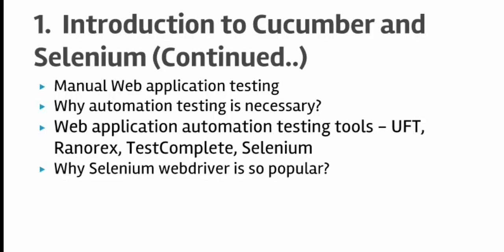Before we start with Cucumber and Selenium, let me explain what manual web application testing is. To test applications, software organizations generally like to do manual testing. But manual testing has disadvantages — you have to enter data manually in web pages and execute the tests. If the test is very lengthy, it takes a lot of time and is also very costly. To get rid of these disadvantages, automation testing comes into picture.